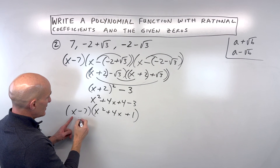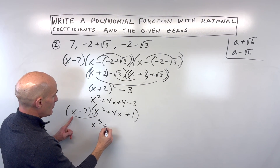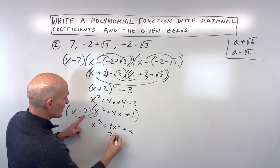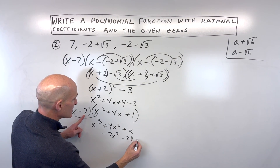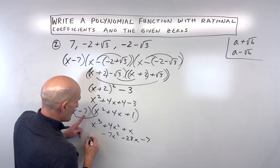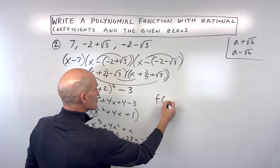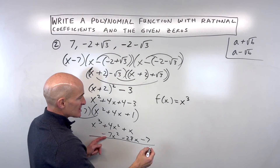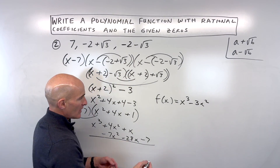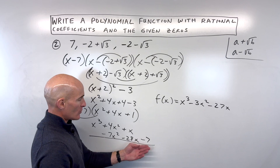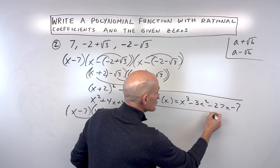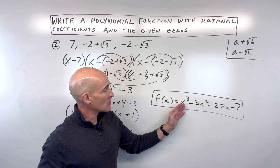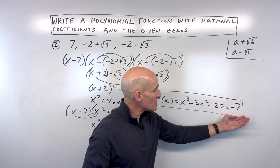Distributing x to all three terms gives x cubed plus four x squared plus x. Distributing negative seven gives negative seven x squared minus 28x minus seven. Combining like terms: x cubed, four x squared minus seven x squared is negative three x squared, x minus 28x is negative 27x, and negative seven. So our polynomial function with rational coefficients is f of x equals x cubed minus three x squared minus 27x minus seven.